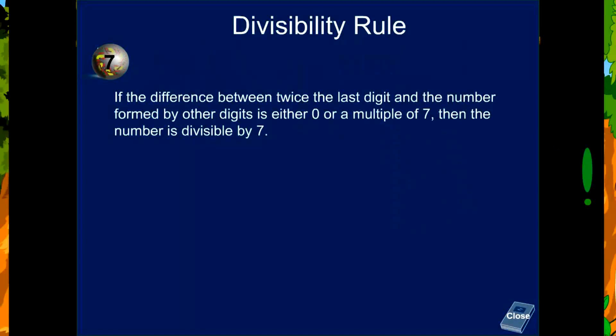If the difference between twice the last digit and the number formed by the other digits is either 0 or a multiple of 7, then the number is divisible by 7.